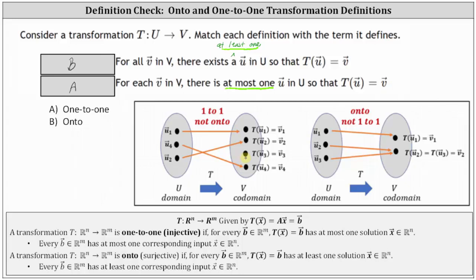The first mapping is not onto because there has to be at least one solution, and the third equation has no solution — that's why it's not onto. Looking at the second mapping, which is onto and not one-to-one: for the second equation, T of vector u₂ equals T of vector u₃, both equaling vector v₂, so there are two solutions. Both u₂ and u₃ are solutions, which is why this mapping is not one-to-one. But it does meet the requirement for onto because both equations have at least one solution.